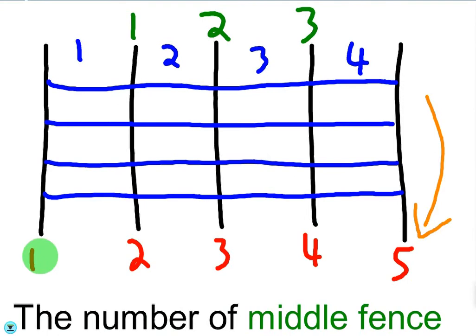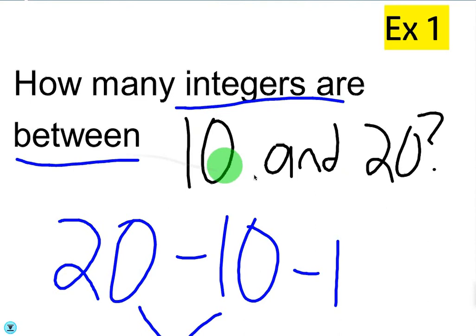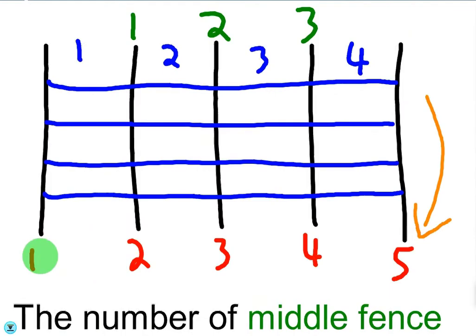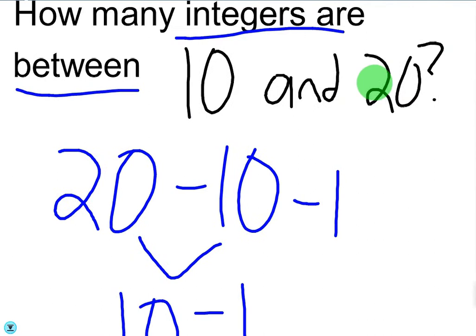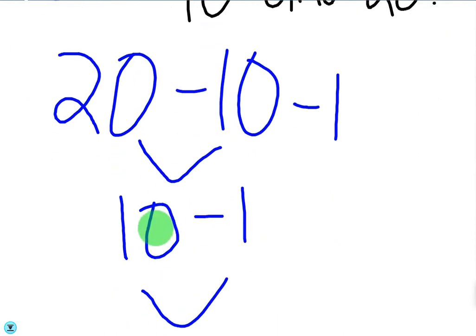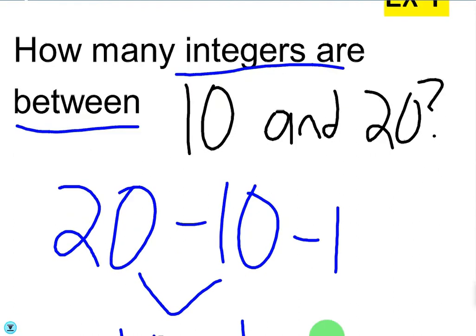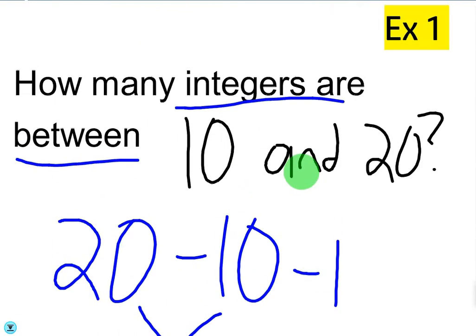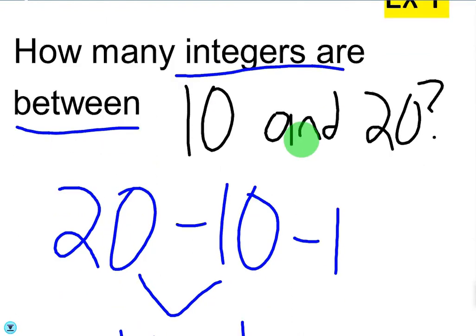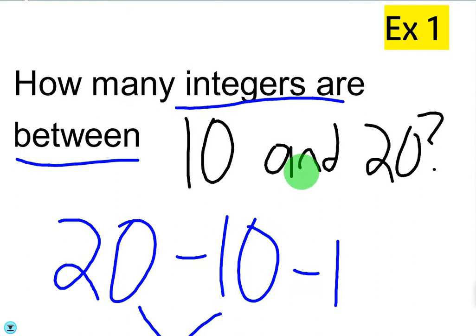Let's look at some examples. First question: how many integers are between 10 and 20? You could count them out — 11, 12, 13, 14, 15, 16, 17, 18, and 19 — not including 10 and 20. But since we know this rule, we can use it and figure out the answer quickly. Our b is 20, our a is 10, so the difference between 20 and 10 is 10. Then we subtract one from that and get nine. So there are nine integers between 10 and 20 — that's 11 through 19. You just find the difference between them and then subtract one.